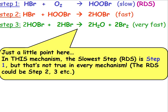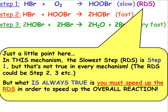Just a little point here. In this mechanism, the slowest step is step 1, but that's not true in every mechanism. In some mechanisms, the rate determining step is step 2, or step 3, etc. But what is always true is you must speed up the rate determining step in order to speed up the overall reaction.